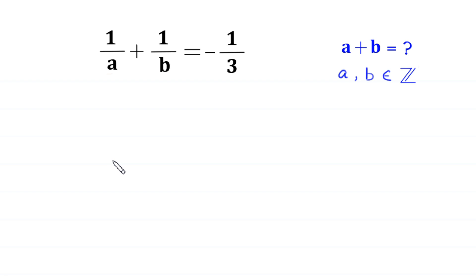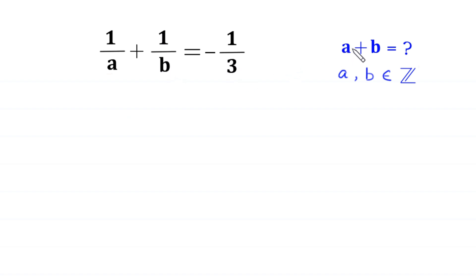Hello everyone, you are welcome to how to solve this very nice algebra equation. 1 over a plus 1 over b is equal to negative 1 over 3. Our job is to find all possible values of a plus b, such that a and b are integers.